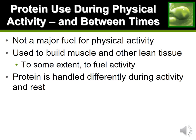The last fuel source is protein. You may have noticed that protein wasn't listed on the fuel chart, and that's because protein is not really used for physical activity for the most part — if we use it, we're breaking down muscle and tissues, which we don't want. So we try to prevent the body from using protein as much as possible by using the other fuels first.